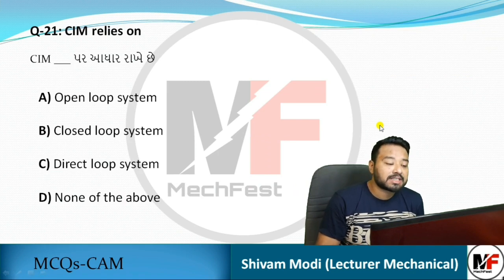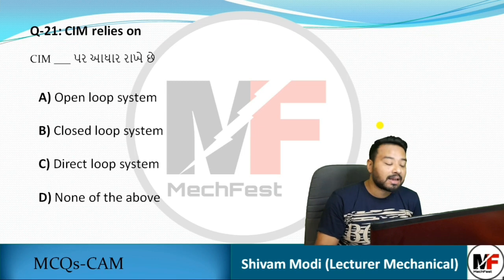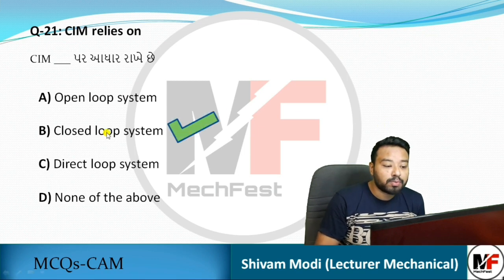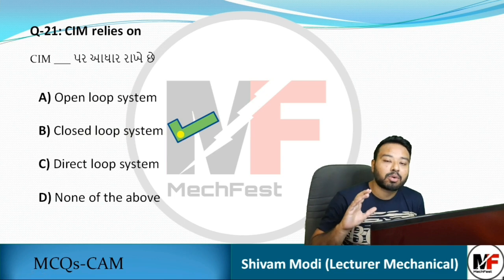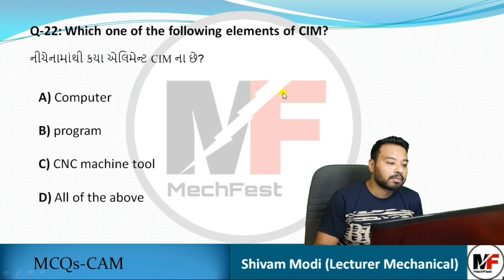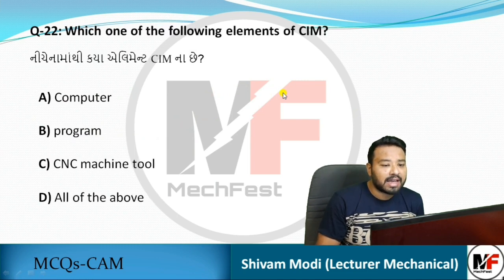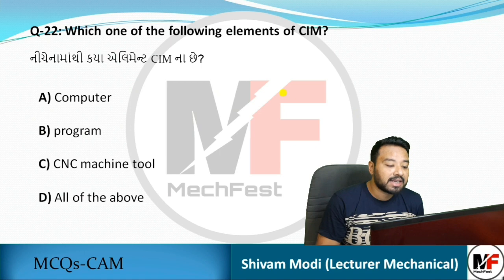Next question: CIM relies on — the answer is a closed-loop control system. CIM always works on a closed loop, meaning there is always feedback present. In an open-loop control system, there is no feedback.